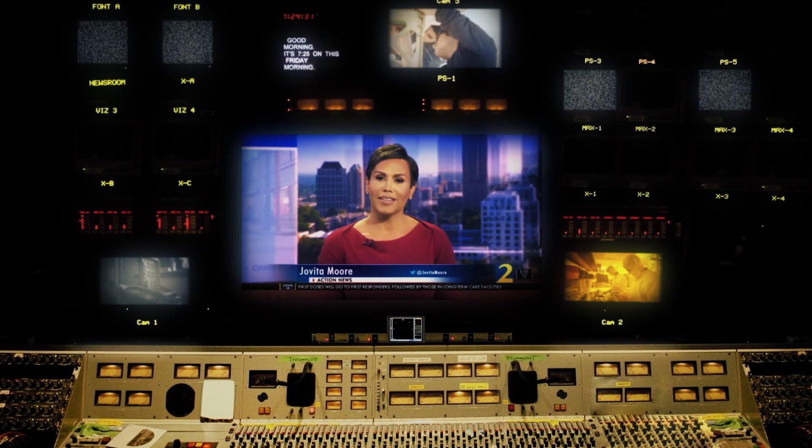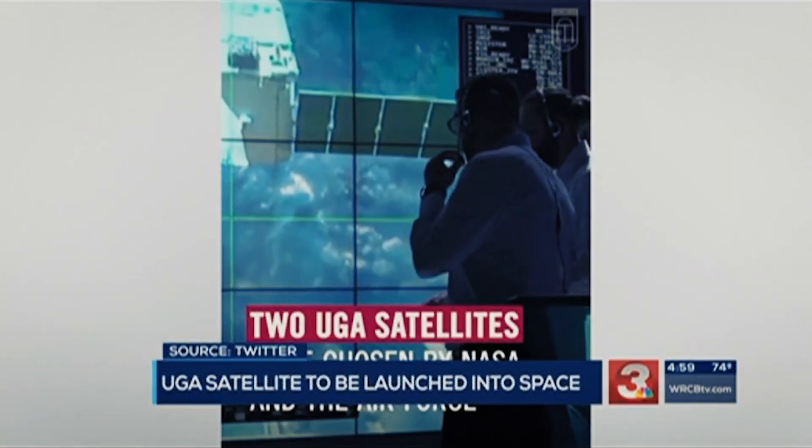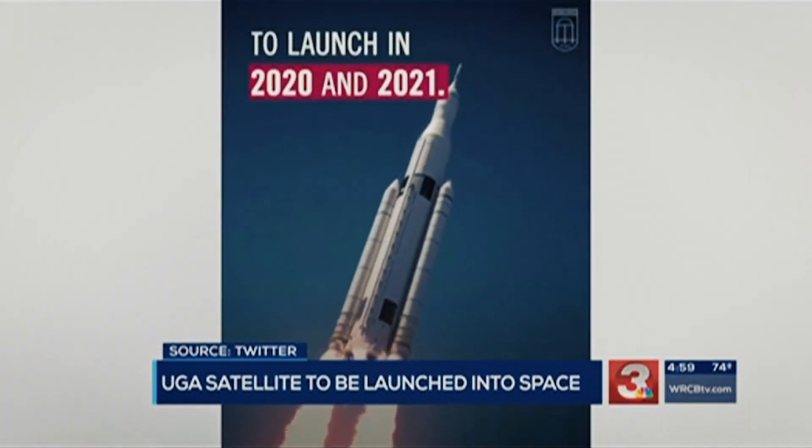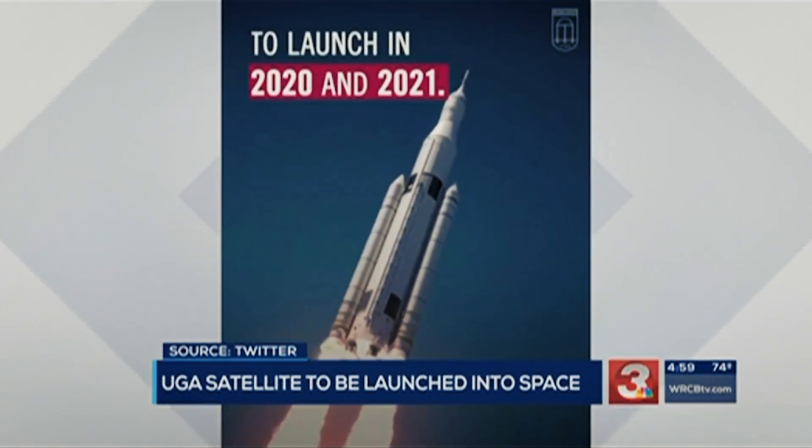Some local students are taking a giant leap for the University of Georgia. A University of Georgia student-designed satellite will be launched into space tonight. UGA is teaming up with NASA and the Air Force to create two satellites. The project was dreamt up in 2016 by three students who just wanted to make what they called a glorified Sputnik.